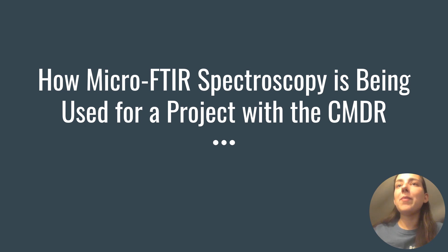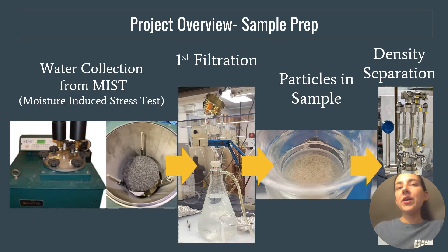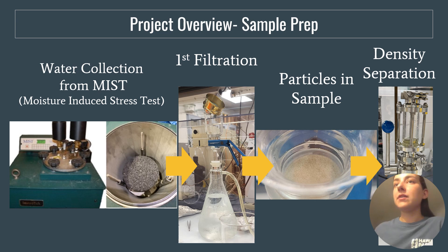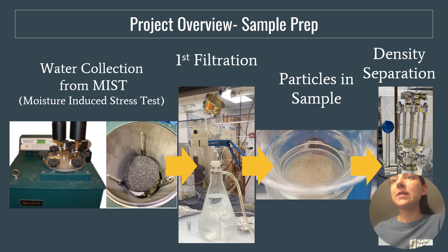Now I'm going to get into how micro FTIR spectroscopy is being used for a project with the CMDR, the project I was preparing for. We are collecting water samples from a machine that pushes and pulls water through asphalt samples. We then are filtering the water for particles between 30 and 300 microns in size. The particles are then taken from that filter and placed into a density separation device, where the less dense particles, such as plastics, will float to the top chamber, and particles that are more dense, such as rocks or gravel, will sink.